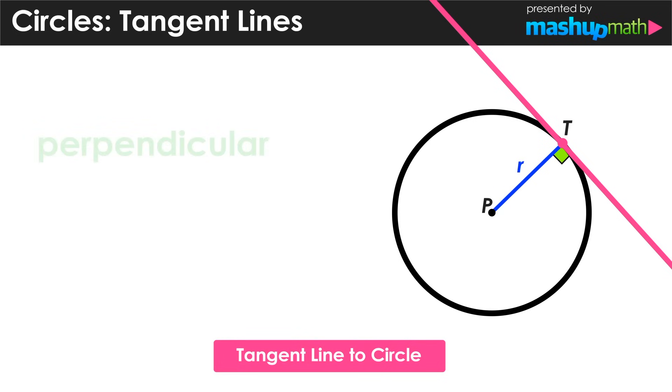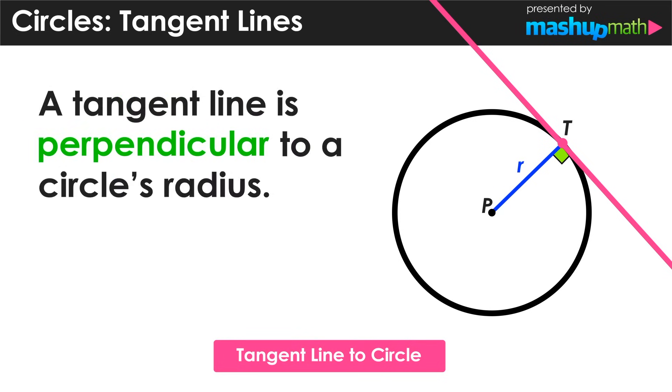And we can say that a tangent line is perpendicular to a circle's radius. So if we add another point on the tangent line, point J, we can conclude that angle PTJ has a measure of 90 degrees.